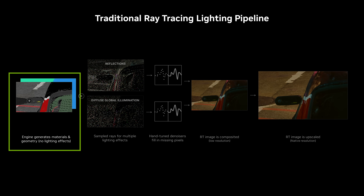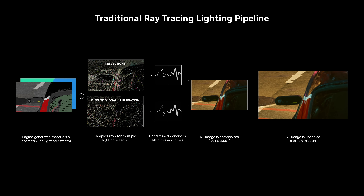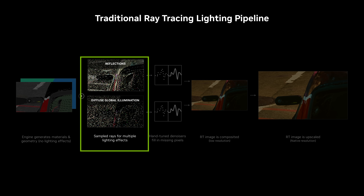The game engine has the materials and geometry for the scene, but that doesn't tell us how the scene looks because we haven't computed how all the lighting interacts with the scene. To compute the final image with ray tracing, we send rays into the scene to interact with the lighting and geometry.